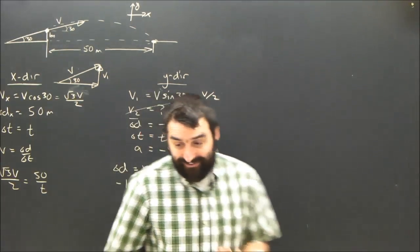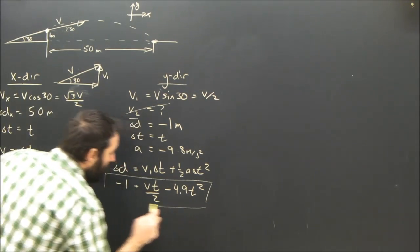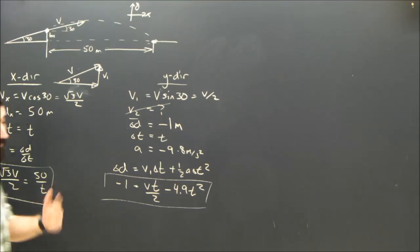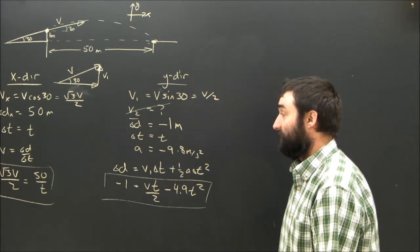subbing in there, I get negative 1 equals v times t over 2 minus 4.9 t squared. And now looking at it, I can see, I hope that I have two equations, two unknowns. And you all know that you can solve a system of equations. Two equations, two unknowns, there is a solution.